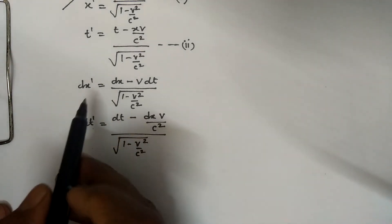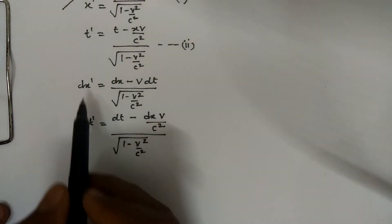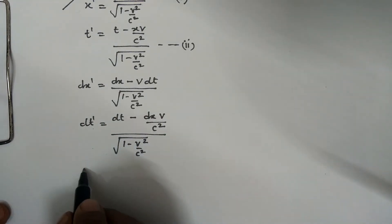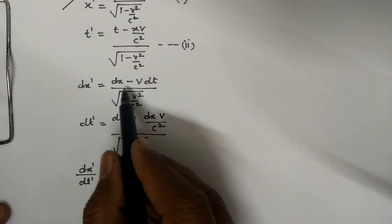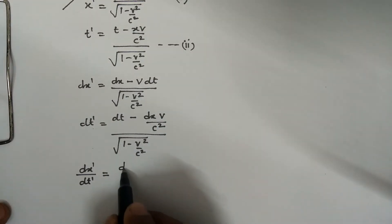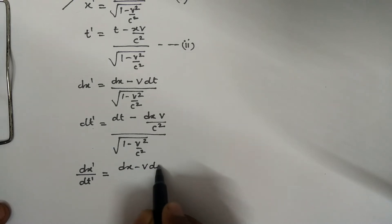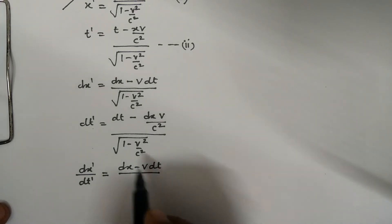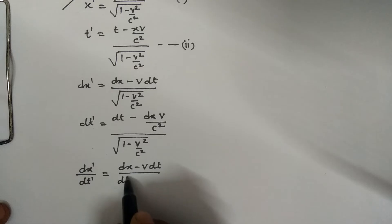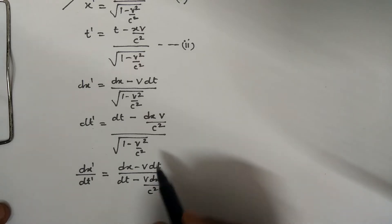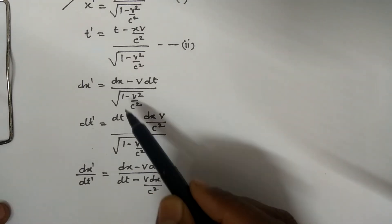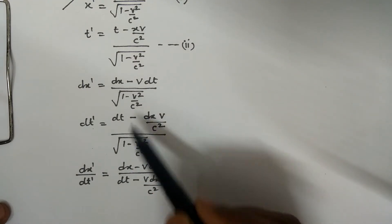Now divide dx-dash by dt-dash. It becomes dx-dash upon dt-dash equal to (dx minus V dt) upon (dt minus V dx upon C-square). The under-root terms cancel out.